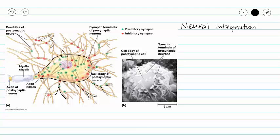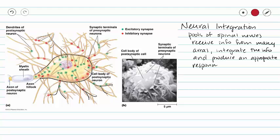So when we talk about neural integration, we are really talking about receiving information from many different areas, then integrating that information to produce an appropriate response. So as all this information comes into this cell body, this cell body is going to make a decision on what information to send out to other areas of the spinal cord or the brain.